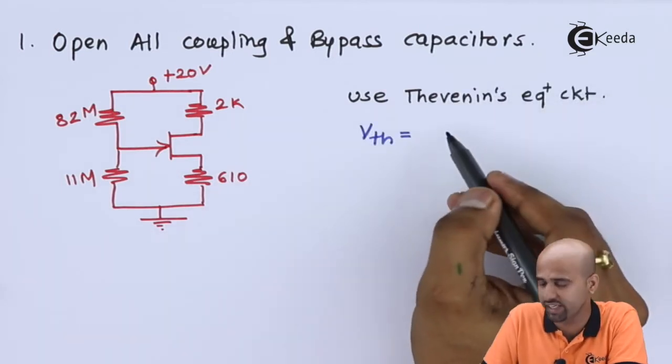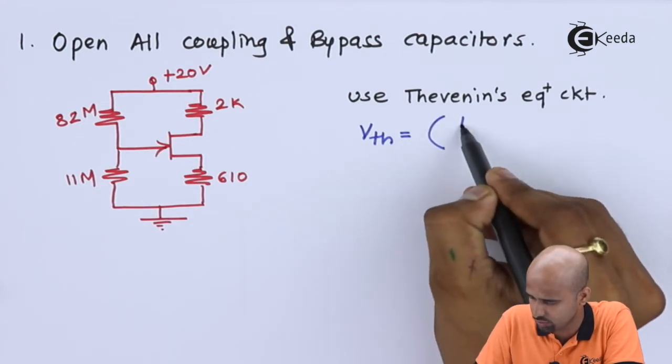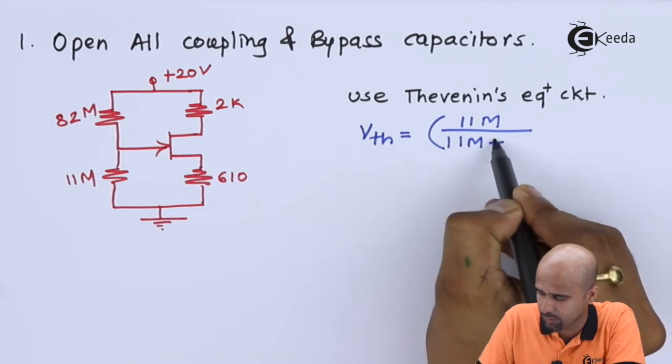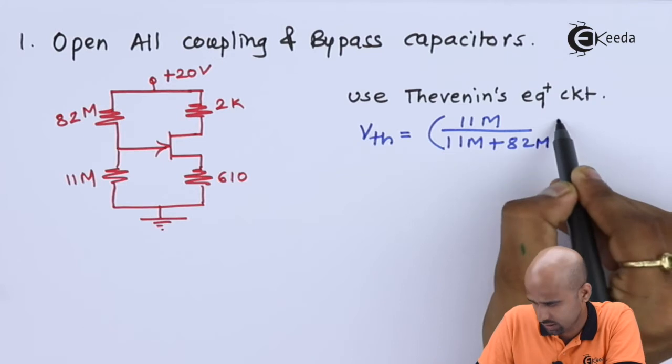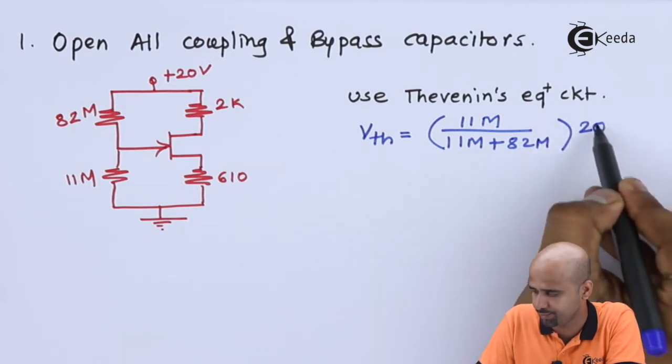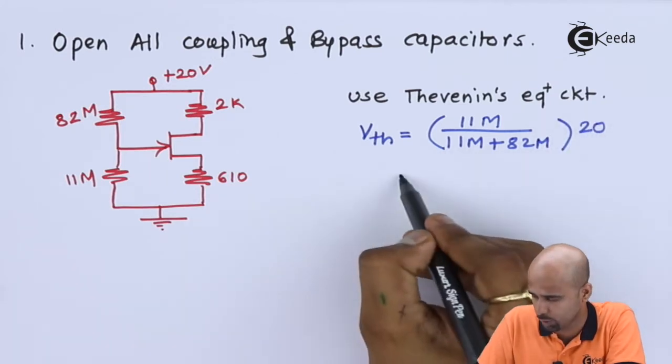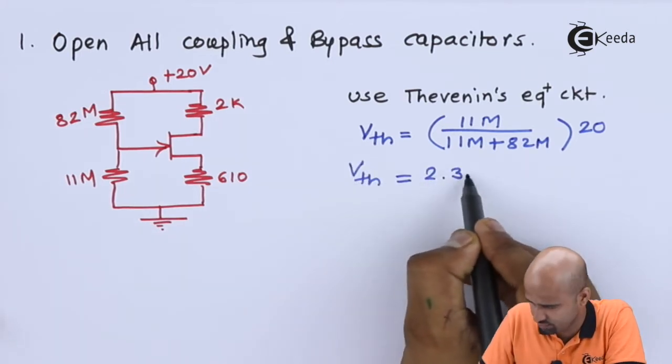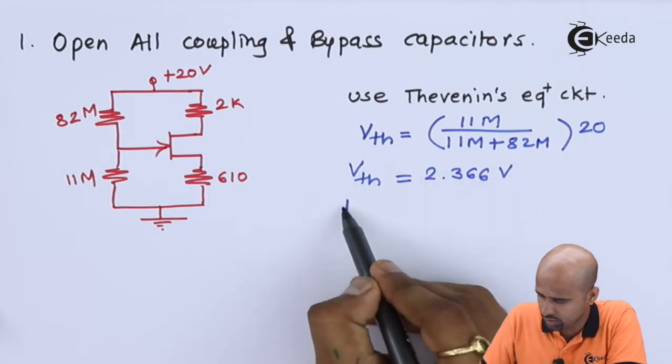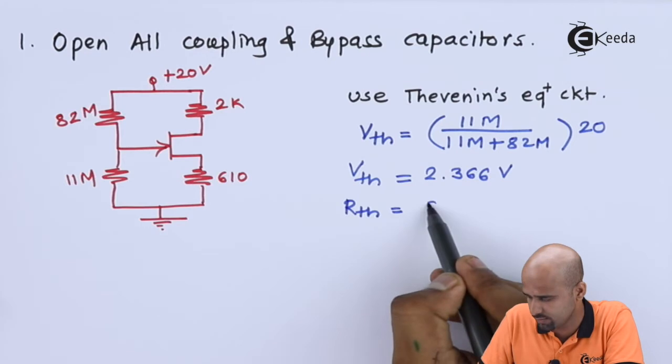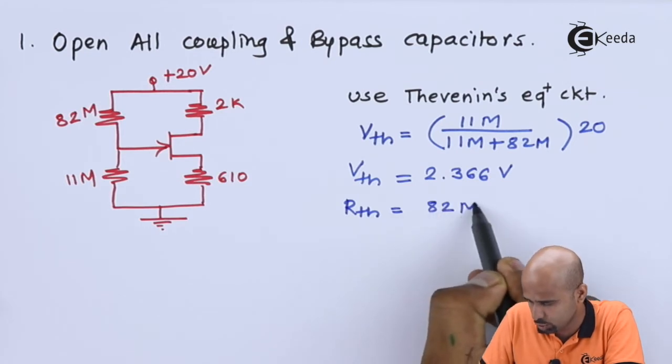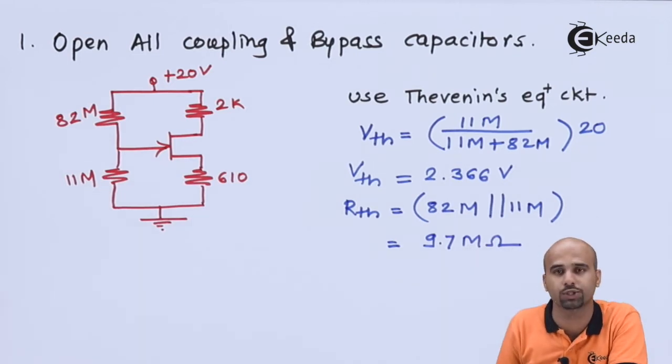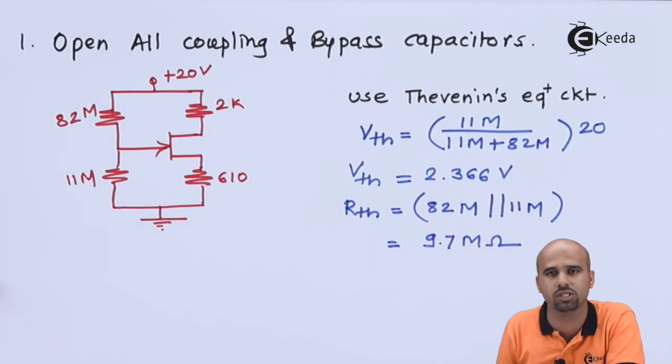What will be the value of VTH? VTH = 11 mega divided by (11 mega + 82 mega) multiplied by 20. Calculate that value. Come on quick. Value of VTH is 2.366 volts. Calculate the value of RTH. RTH is 82, simple, 9.7 mega ohm. That is the value of RTH. Let's modify this circuit by using Thevenin's equivalent model.